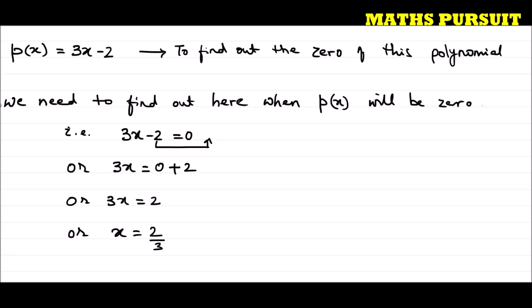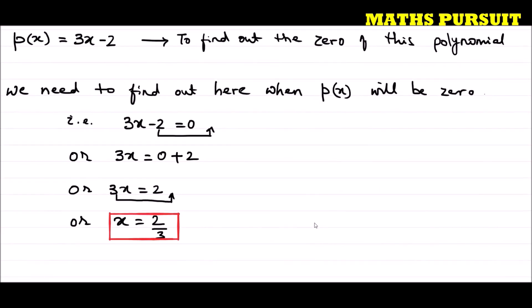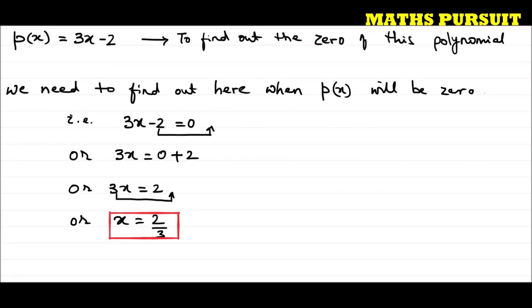So we got x is equal to 2 upon 3. I moved the 3 — that means 3 into x — to the right hand side, so it became 2 upon 3; it got divided. Our answer is x is equal to 2 upon 3. We can highlight this and write in our own words that the zero of the given polynomial is 2 upon 3.